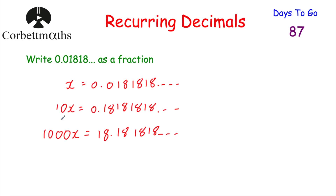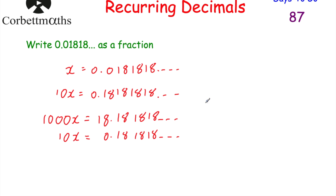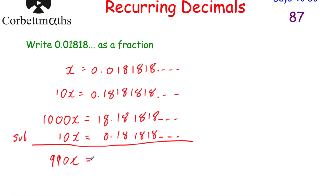So we've got 10x equals 0.181818... and 1000x equals 18.181818... If we take 10x away from 1000x, the bits after the decimal point cancel out to zero. So let's do that — writing 10x beneath 1000x: we have 1000x minus 10x which gives 990x. On the right-hand side, 18.181818... minus 0.181818... — the recurring decimal parts cancel.